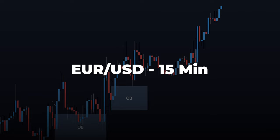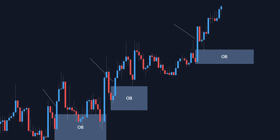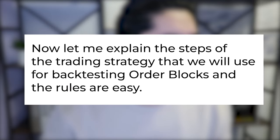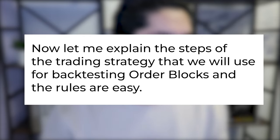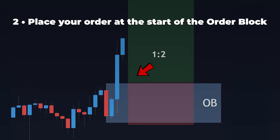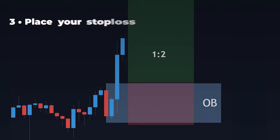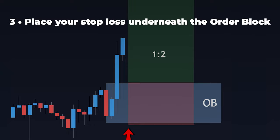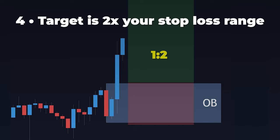Here on the Euro/USD 15-minute timeframe I have marked all of the valid order blocks that have clear imbalance, which also led to a break of structure, according to the rules we've learned. The steps of the trading strategy for backtesting order blocks: point one, identify a valid order block; point two, place your order at the start of the order block; point three, your stop loss is just underneath the order block; and the target is two times your stop loss range. This way, even with a win rate as low as 34% you will be at break even.